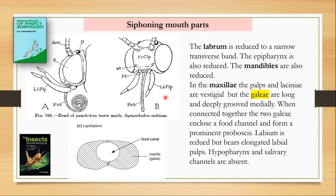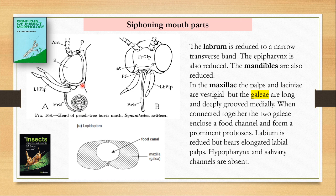So what makes this proboscis? It is made with the maxillae — not the whole maxilla, but only the galea of two sides. In the maxilla, the palps and laciniae are vestigial, but the galeae are long and deeply grooved medially. The galea of two sides get extended like a straw and connect. Because of the median groove, they form the straw, which can be coiled when not in use and extended forward when there is a flower. These two galeae enclose the food channel and form a prominent proboscis.